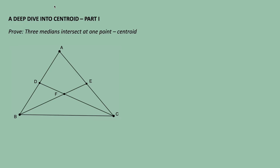Hi, this is Jim from Northern Academy. In geometry class, we were told that the three medians intersect at one point. A median is a segment adjoining a vertex and the midpoint of the opposite side of the vertex.